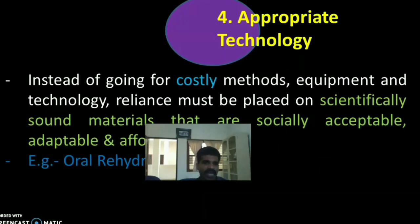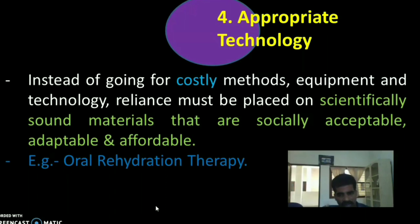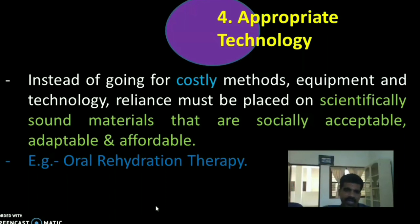The fourth principle is Appropriate Technology. Instead of going for costly methods, equipment and technology, reliance must be placed on scientifically sound materials that are socially acceptable, adaptable and affordable by the individual, family and the community. For example, Oral Rehydration Therapy (ORS) is used to prevent dehydration during diarrhea — it is a very cheap and best remedy to prevent infant mortality.